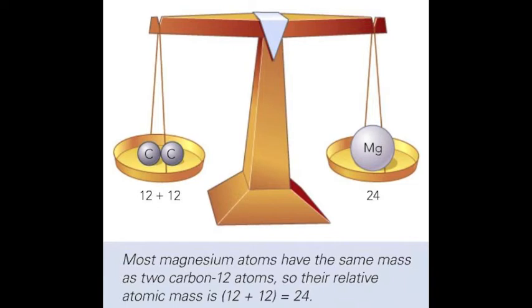Carbon is used as the standard atom. A carbon-12 atom contains six protons, six neutrons, and six electrons. Its relative atomic mass is defined as exactly 12. The masses of all other atoms are compared to this.